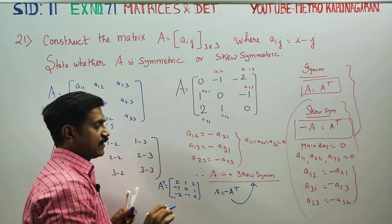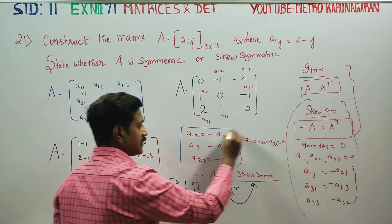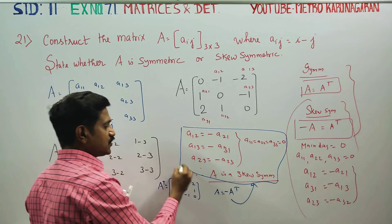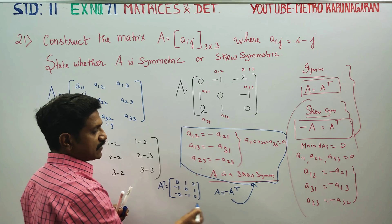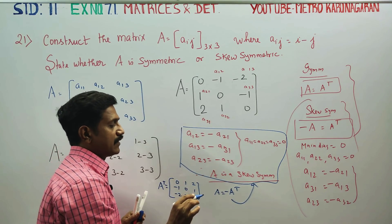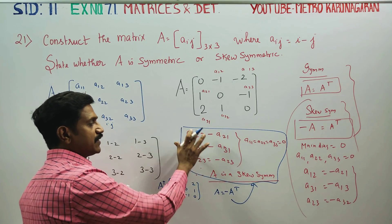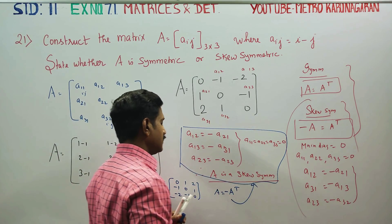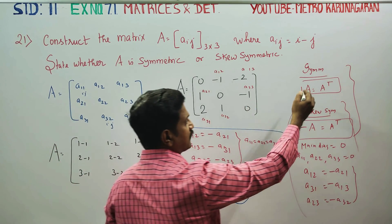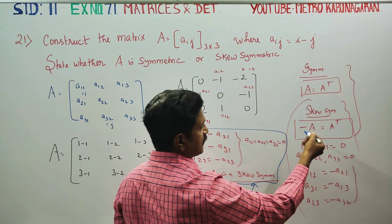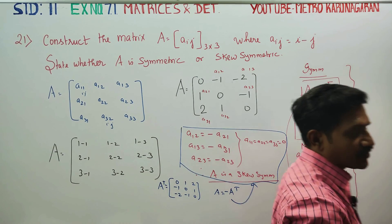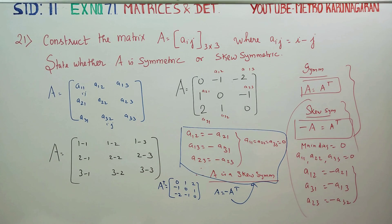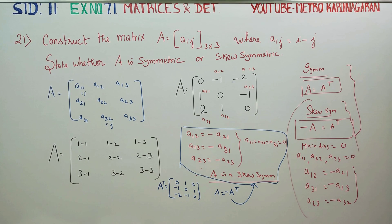If you use this method, it is a shortcut method. The ordinary method is: if A is equal to A transpose, it is a symmetric matrix; if A transpose is equal to minus A, it is a skew symmetric matrix. The given matrix is purely a skew symmetric matrix. Thank you.